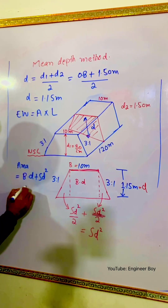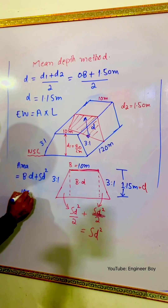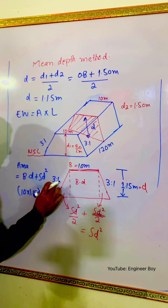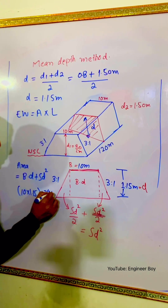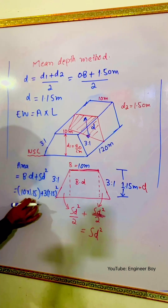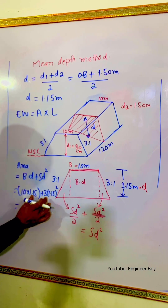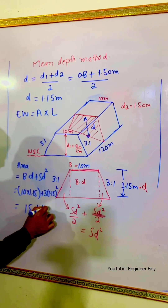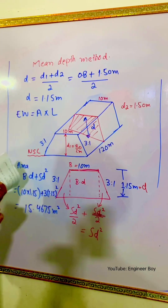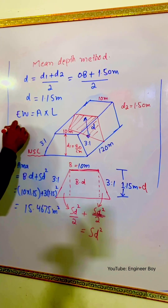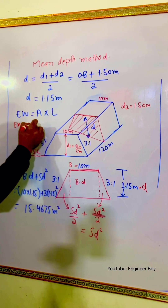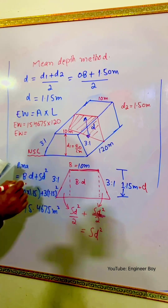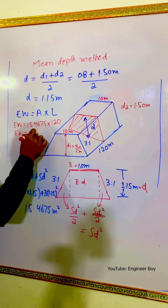Putting in the values: Area = B×D + S×D² = 10 × 1.15 + 3 × (1.15)² = 11.5 + 3.9675 = 15.4675 square meters. Now we can easily determine the earthwork: Area × Length = 15.4675 × 120 = 1856.1 cubic meters.